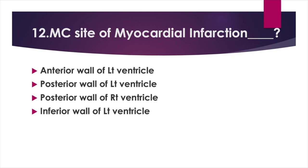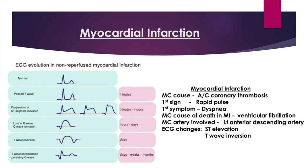Most common site of myocardial infarction — Option A: Anterior wall of left ventricle, Option B: Posterior wall of left ventricle, Option C: Posterior wall of right ventricle, Option D: Inferior wall of left ventricle. Answer: Option A, Anterior wall of left ventricle. Most common cause of MI: acute coronary thrombosis. First sign: rapid pulse. First symptom: dyspnea. Most common cause of death in MI: ventricular fibrillation. Most common artery involved: left anterior descending artery. ECG changes: ST elevation and T-wave inversion.